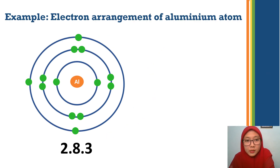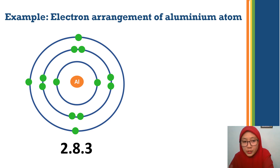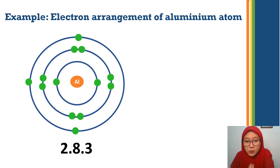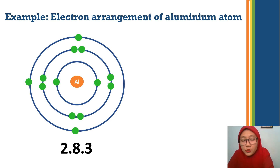Here is the electron arrangement of an aluminum atom. We can write the electron arrangement as 2, 8, 3. Two electrons are in the first shell, eight electrons in the second shell, and three electrons in the outermost shell. So we write the electron arrangement as 2, 8, 3, and at the middle we write the symbol of the atom.